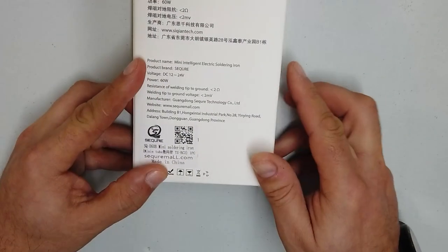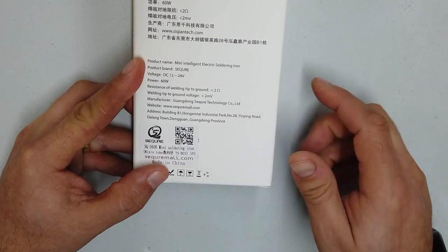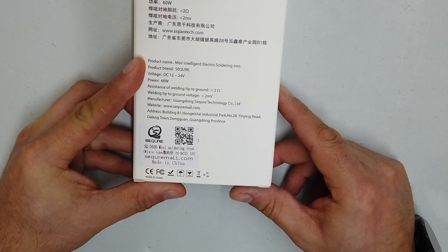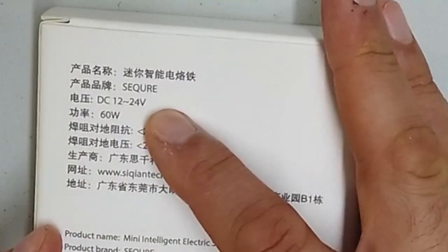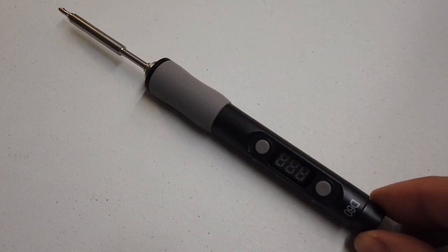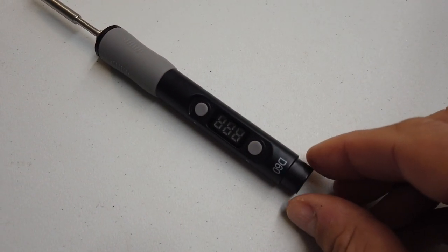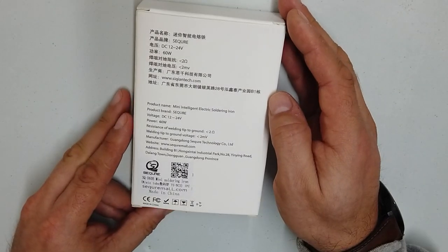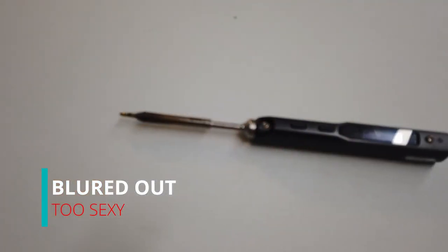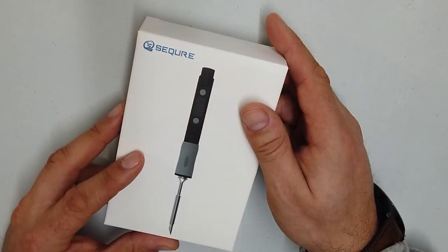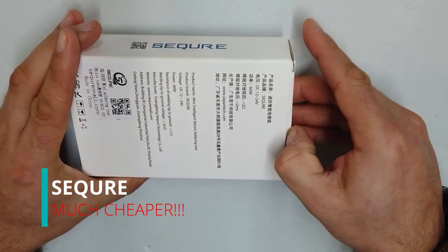These guys are based in Guangdong province in China. This is a 12 to 24 volt 60 watt soldering iron. You could perhaps say it's very similar to a TS-100. But the pricing isn't quite the same as a TS-100.